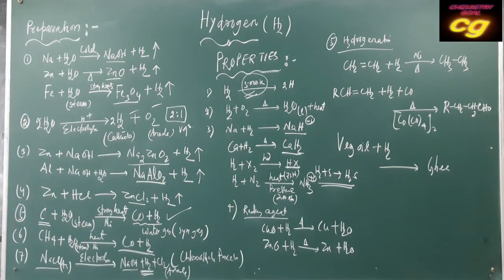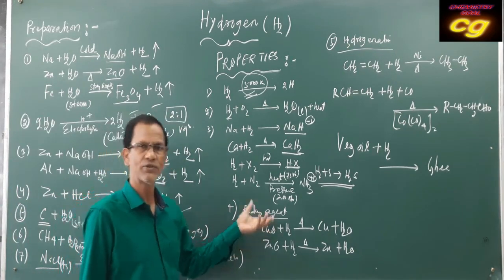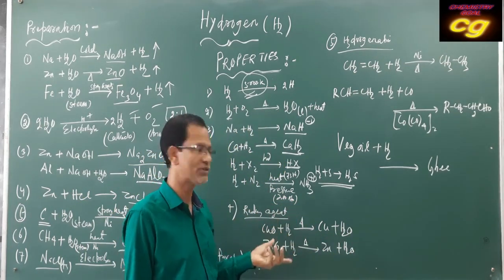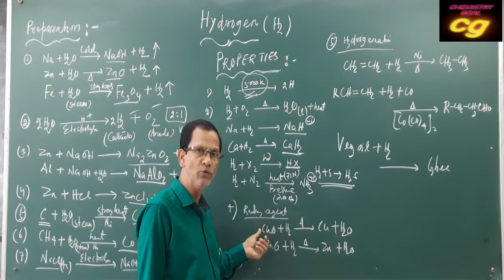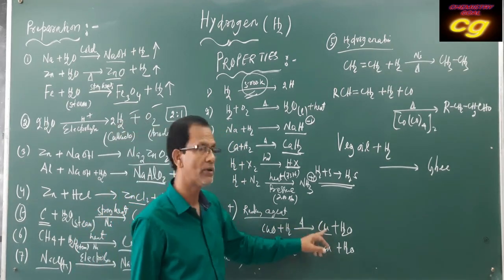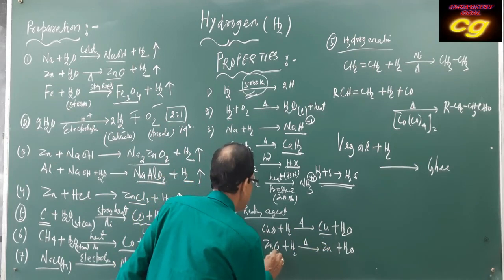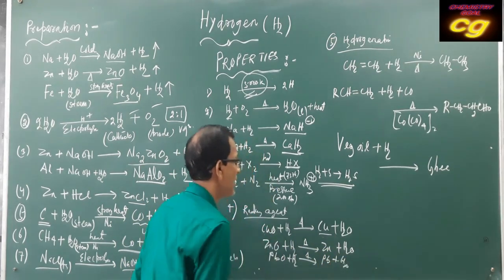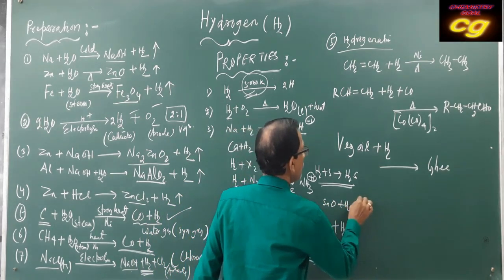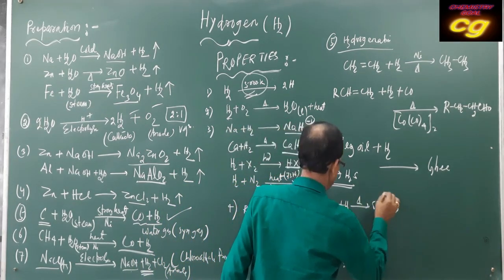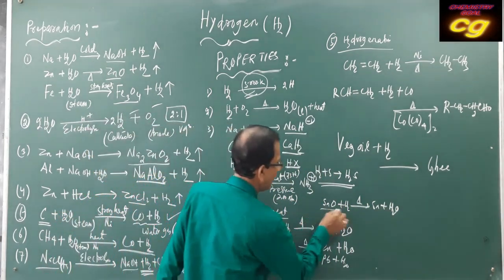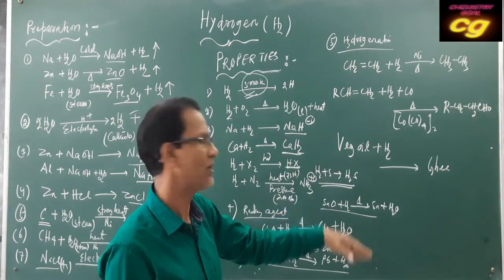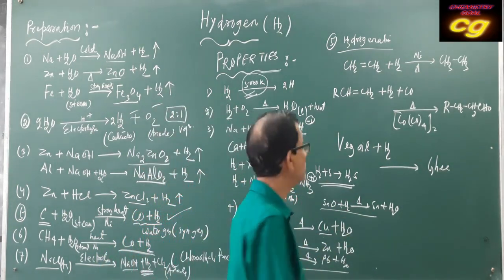The next property is the reducing property — hydrogen acts as a reducing agent. Some metallic oxides of low to moderately reactive metals, when heated in the presence of hydrogen, get reduced to corresponding metals. For example, copper oxide is reduced to copper, zinc oxide to zinc, tin oxide plus hydrogen on heating produces tin and water. This is the reducing property of hydrogen — it reduces metal oxides to corresponding metals.